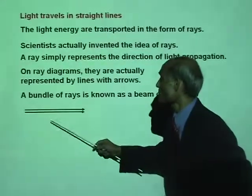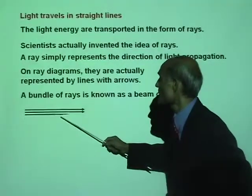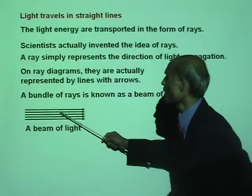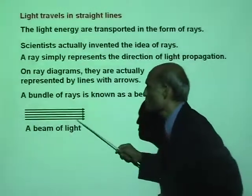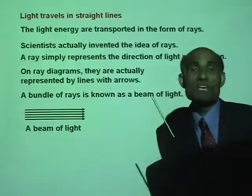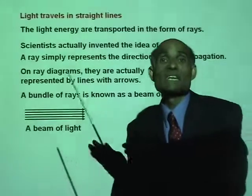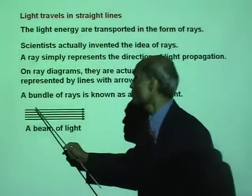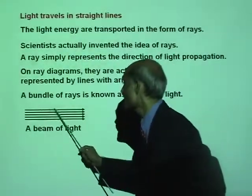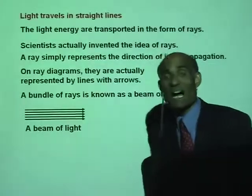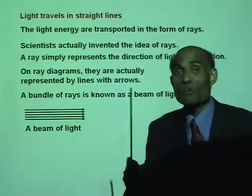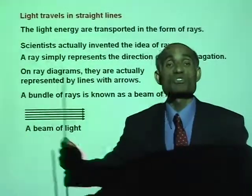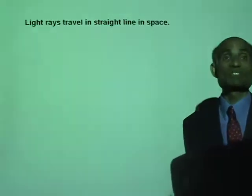Look at that: one ray, two rays, three rays, four rays — you call it a beam of light. A beam of light is a bundle of rays. A line with an arrow indicates the direction in which the light is traveling.